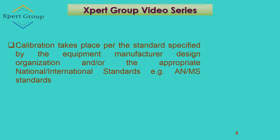Calibration takes place per the standards specified by the equipment manufacturer, design organization, and/or the appropriate national and international standards. For example, ANM standards — Army, Navy, and Military standards. Every manufacturer who produces equipment, instruments, or tools provides a specified standard indicating that calibration must be done after a specified time. You need to follow the manufacturer's specifications.